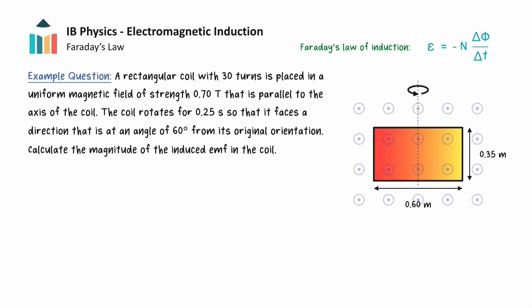We will now consider an example question on Faraday's law of induction. A rectangular coil with 30 turns is placed in a uniform magnetic field of strength 0.7 tesla that is parallel to the axis of the coil. The coil rotates for 0.25 seconds so that it faces a direction at an angle of 60 degrees from its original orientation. Calculate the magnitude of the induced EMF in the coil.